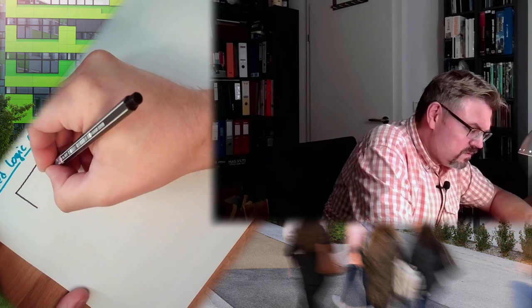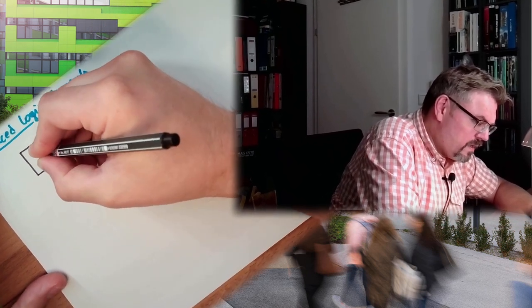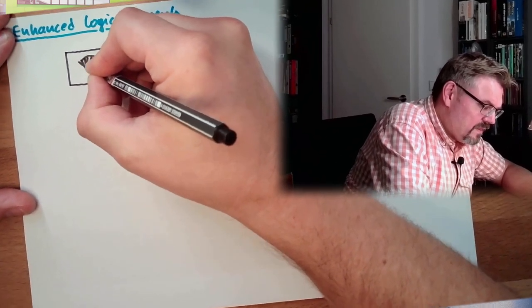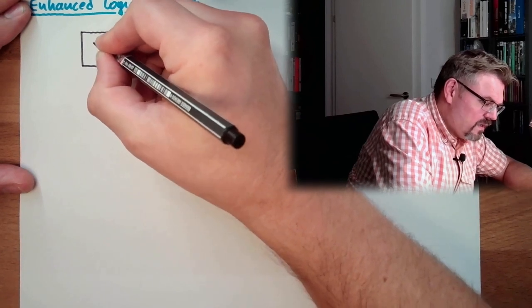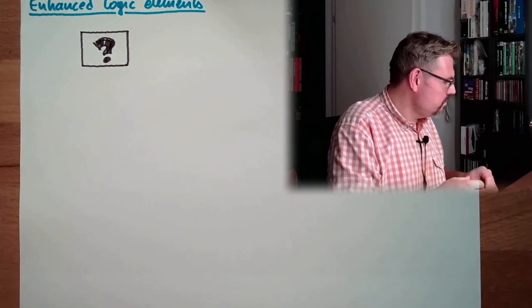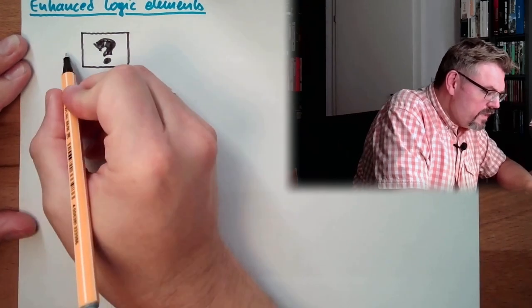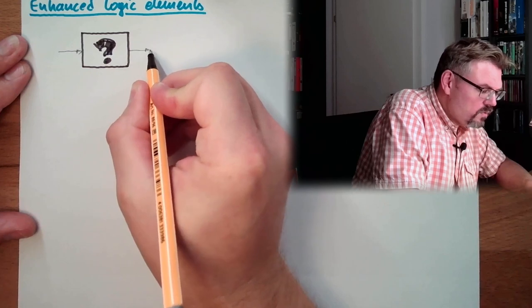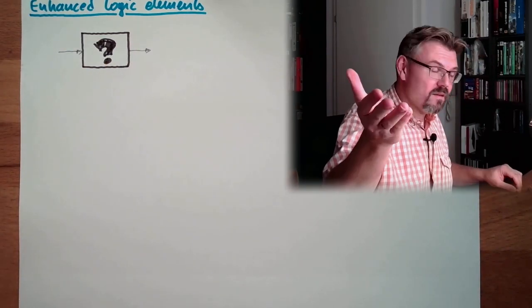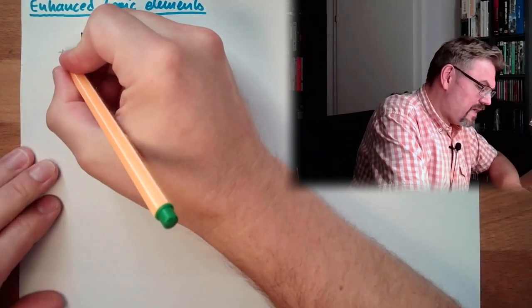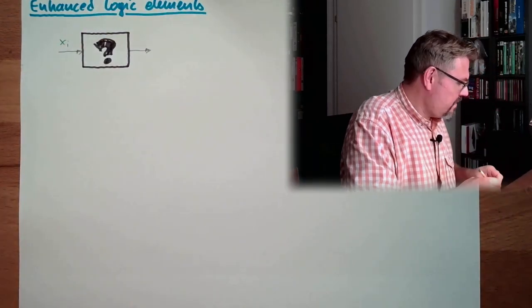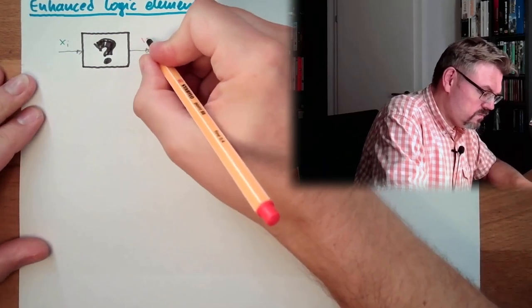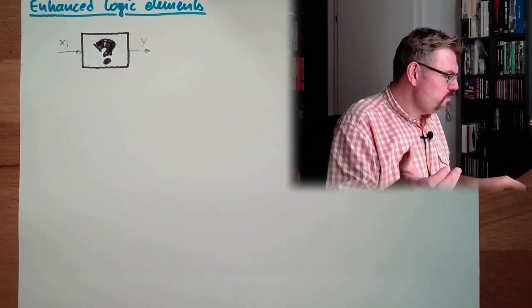Let me show you what I mean. Let's say we have some logic circuit. Doesn't really matter what it is inside now. Whatever is inside there should not bother us right now. We only want to have the outside view. And we say we have one input and one output.